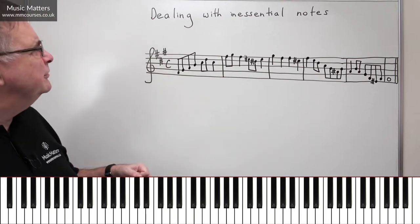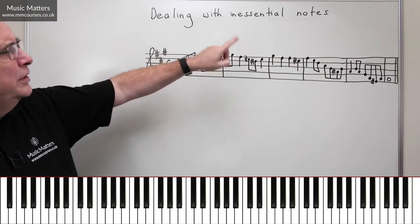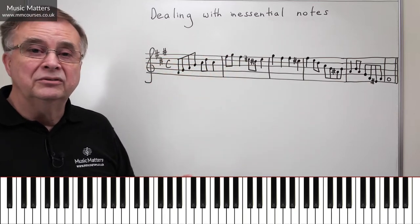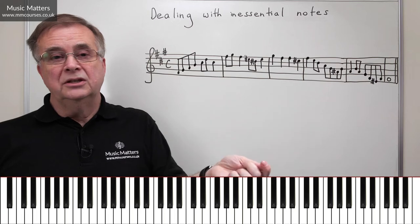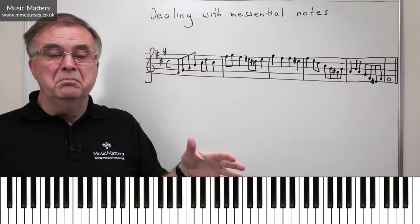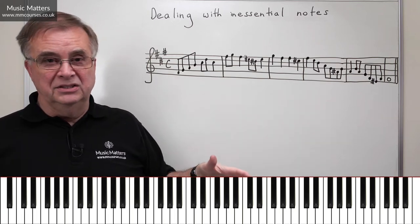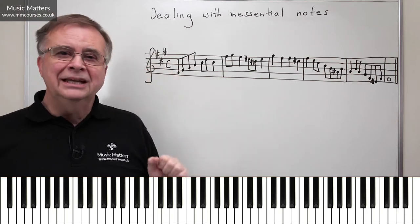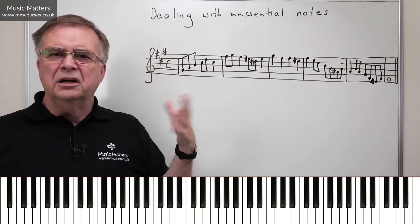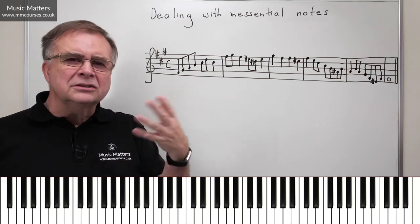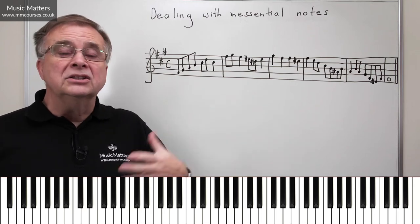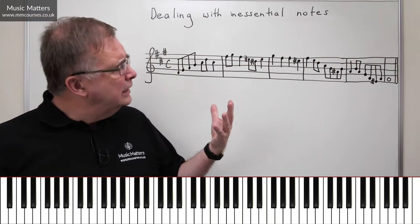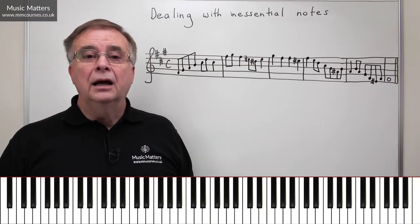We could be in F-sharp minor. Let's have a quick look through the piece. The first thing is I can see quite a few accidentals. Accidentals could be telling us a number of things: they could be telling us we're moving to another key, so it might be modulating during the course of a piece that's fundamentally in A major. It could be that some of these accidentals are chromatic notes that are just decorating and colouring the melody in some way.